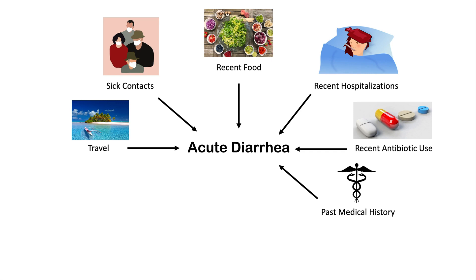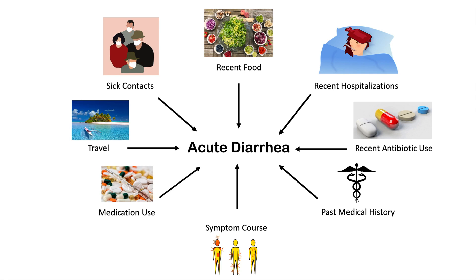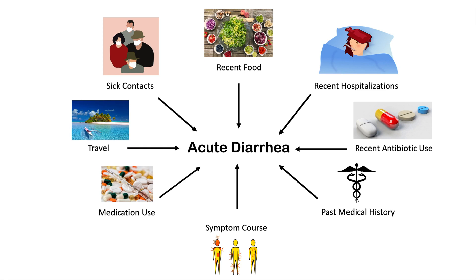Another factor is looking at the symptom course — how have the symptoms changed over time? Have they gotten better, worse, or stayed the same? This can help delineate the cause. We also look at medication use, specifically laxatives — whether someone has been taking or abusing laxatives to a point where they're getting acute diarrhea, which could easily explain the presentation.